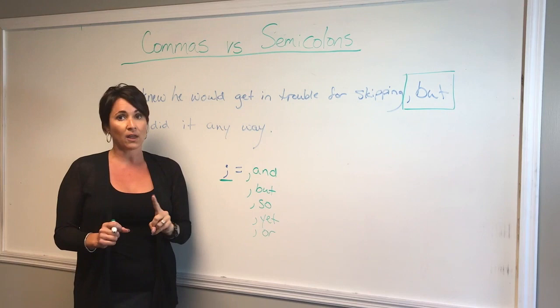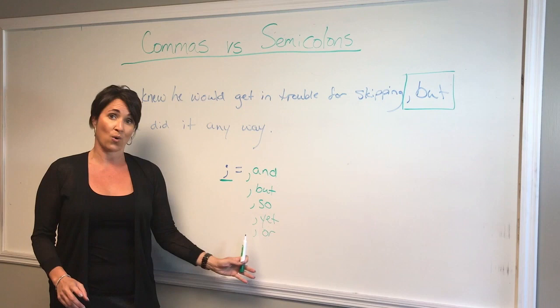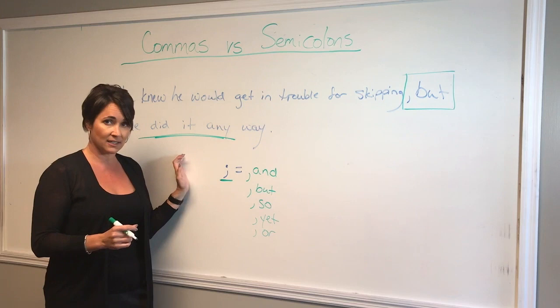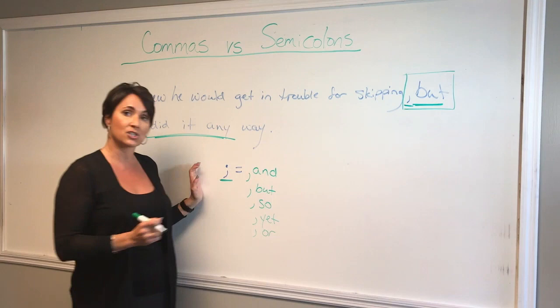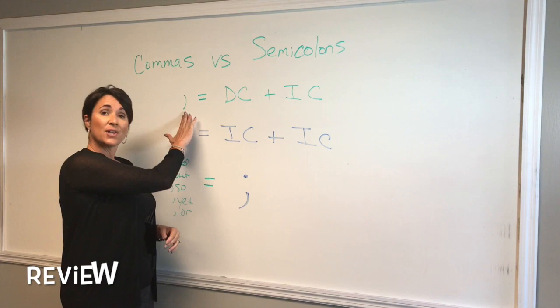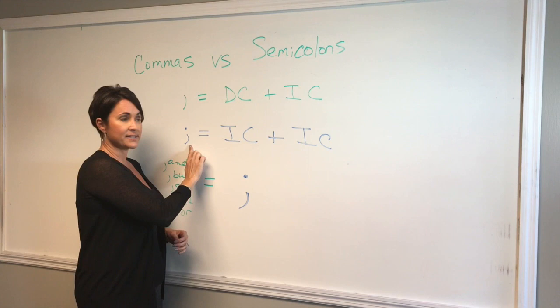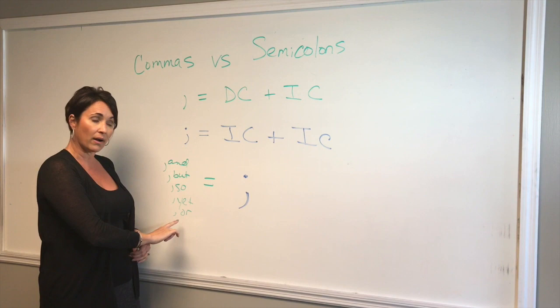So be careful on the exam. If you see just a but, or an and, or a so, or a yet, or an or, make sure that the other piece of the sentence is not an independent clause. If it is an independent clause — a sentence that can stand on its own — then we want to make sure we have the comma attached to the conjunction because it functions like a semicolon. So just to review: commas alone separate dependent clauses and independent clauses; semicolons separate two independent clauses; and a comma with and, but, so, yet, or or acts like a semicolon and separates two independent clauses.